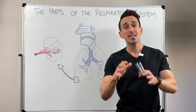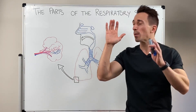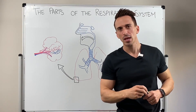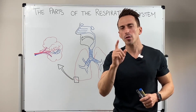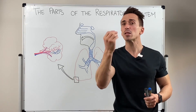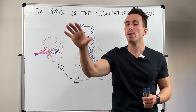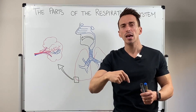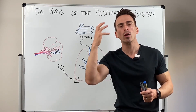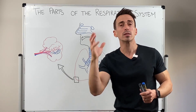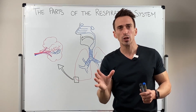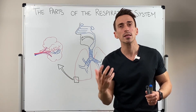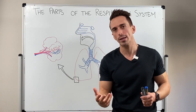Hi everybody, Dr. Mike here. In this video we're going to take a look at parts of the respiratory tract. We're going to follow the pathway of air from being inspired from the outer atmosphere all the way down into our lungs and look at some of the major anatomical compartments or structures that air needs to move through — what we call the conducting pathways.